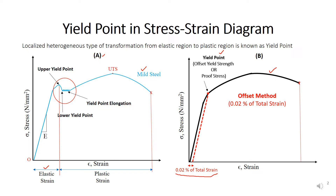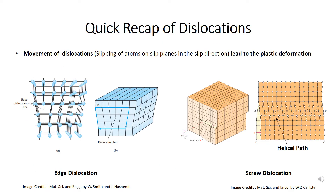The ratio of stress to strain within the elastic limit is known as the modulus of elasticity. As we are discussing permanent deformation or plastic deformation, we need to understand how plastic deformation occurs. It occurs due to the movement of dislocations, which in turn occur due to the slipping of atoms on the slip planes in the slip direction.